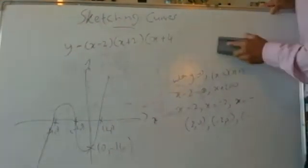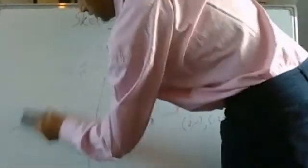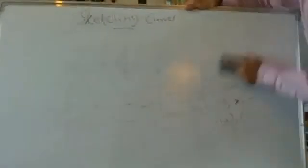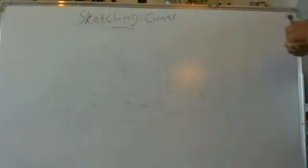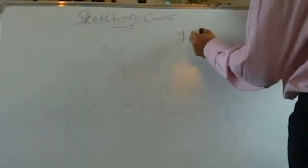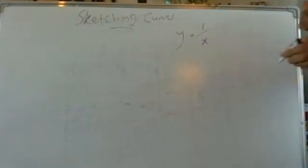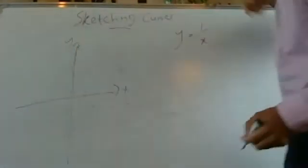Now let's sketch a reciprocal graph. A reciprocal graph is something in the form of y equals 1 over x, or y equals 1 over something basically. So if you want to sketch y equals 1 over x, there's a little work to do.